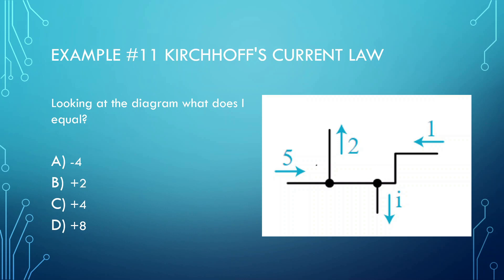When we look at this junction here, we can notice that we have 5 going in and 2 going out, which also means we need to have 3 going out, because the same that goes out has to come in. So 5 went in, so 5 has to go out. Now if we look at this next junction, we can see 3 is going in, but another 1 is going in, so this over here has to be positive 4.